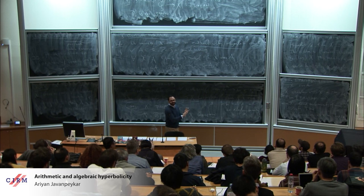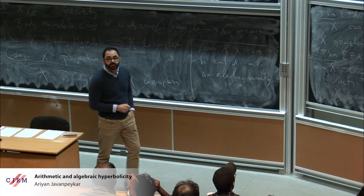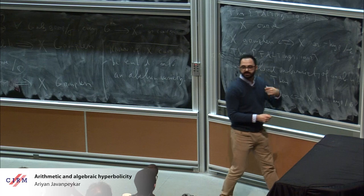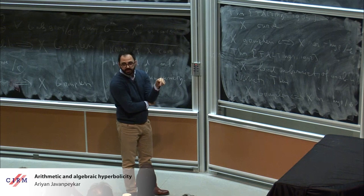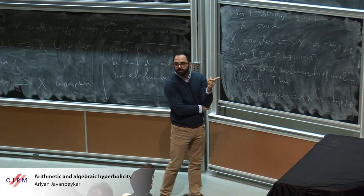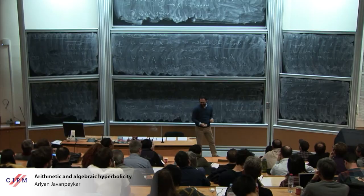Faltings proved in 1992 that if X is a closed sub-variety of an abelian variety, then grouplessness is equivalent to arithmetic hyperbolicity. Apart from one other theorem about Shimura varieties of abelian type, this is essentially everything we know about arithmetically hyperbolic projective varieties. Mordell is only over Q-bar; the full statement — that a genus ≥ 2 curve over Q-bar is arithmetically hyperbolic over any algebraically closed field of characteristic zero — is slightly more difficult.